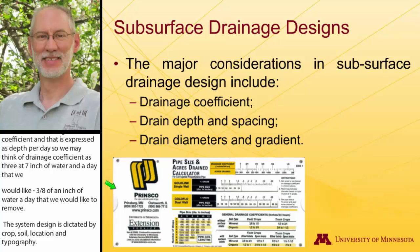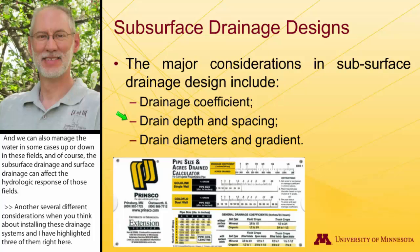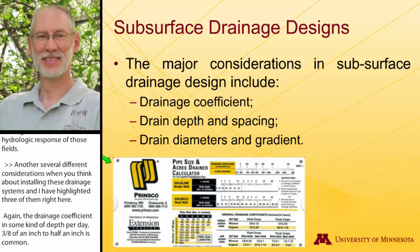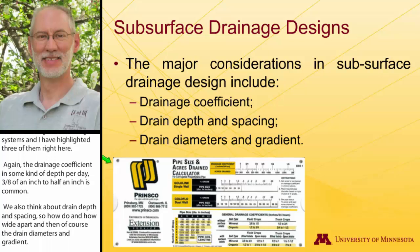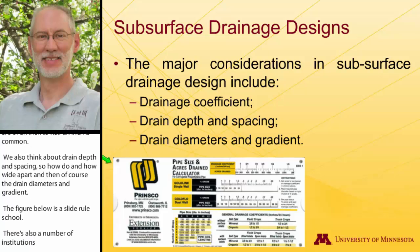There are several considerations when thinking about installing drainage systems. The drainage coefficient is usually expressed as some depth per day — three-eighths of an inch to half an inch is fairly common. We also think about drain depth and drain spacing: how deep and how far apart are those drain pipes, and then the diameters and gradients. There are also tools from institutions like the University of Minnesota and Iowa State, as well as electronic or digital tools, to help make determinations for drainage systems.